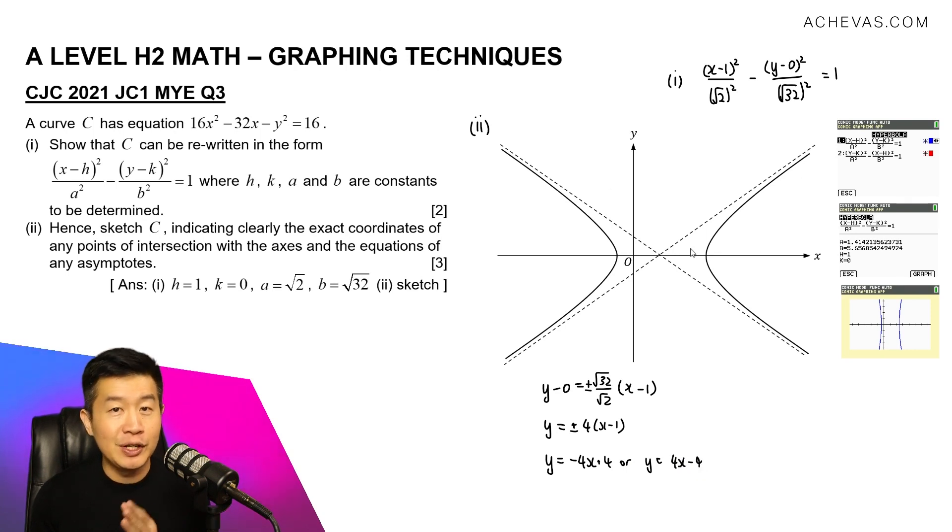So for the two oblique asymptotes that I've already drawn here, this with the negative gradient will be y = -4x + 4. As for this, which has the positive gradient will be y = 4x - 4. As for the center of the hyperbola, we can derive that based on this number and this number. So it is going to be (1, 0). The x-coordinate is 1. The y-coordinate is 0.